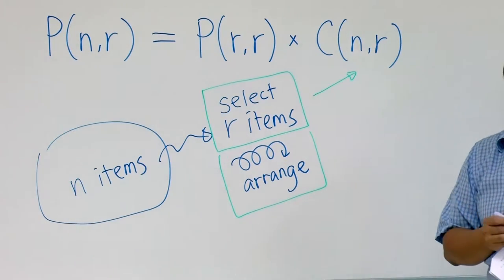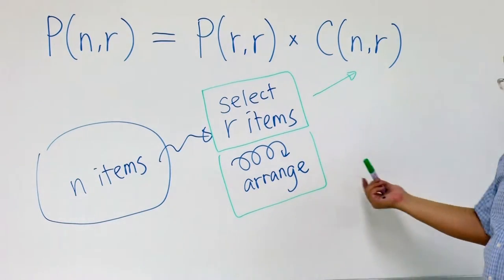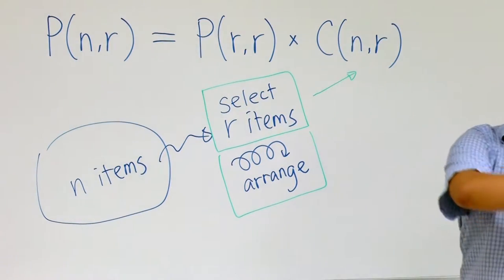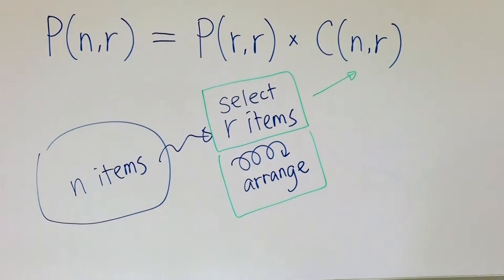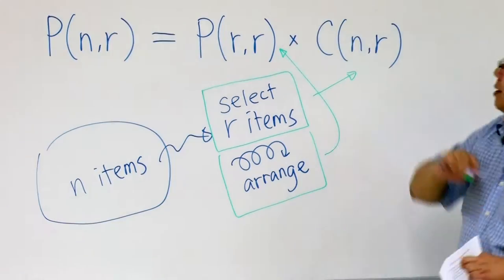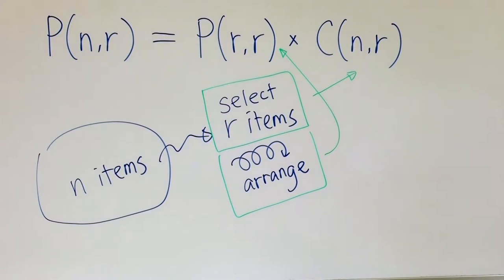What is the number of ways to select r items? The number of ways to select r items is C(n,r). How about the number of ways to arrange? You have already selected r items, so after the first step you just have r items, and then you want to make arrangement of r items out of r items. So this number is P(r,r). This is the reason why the formula is correct.